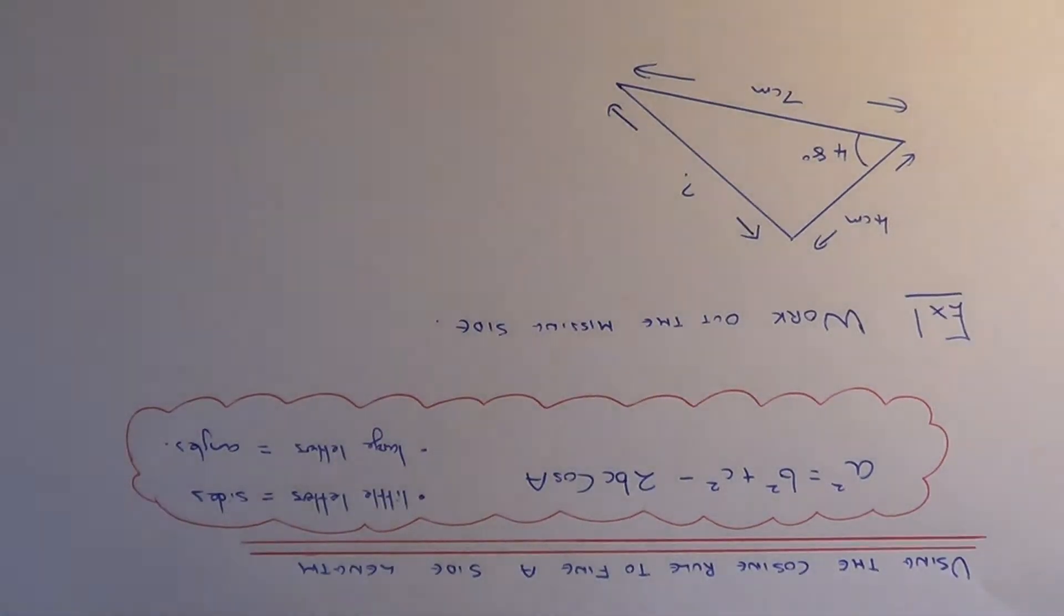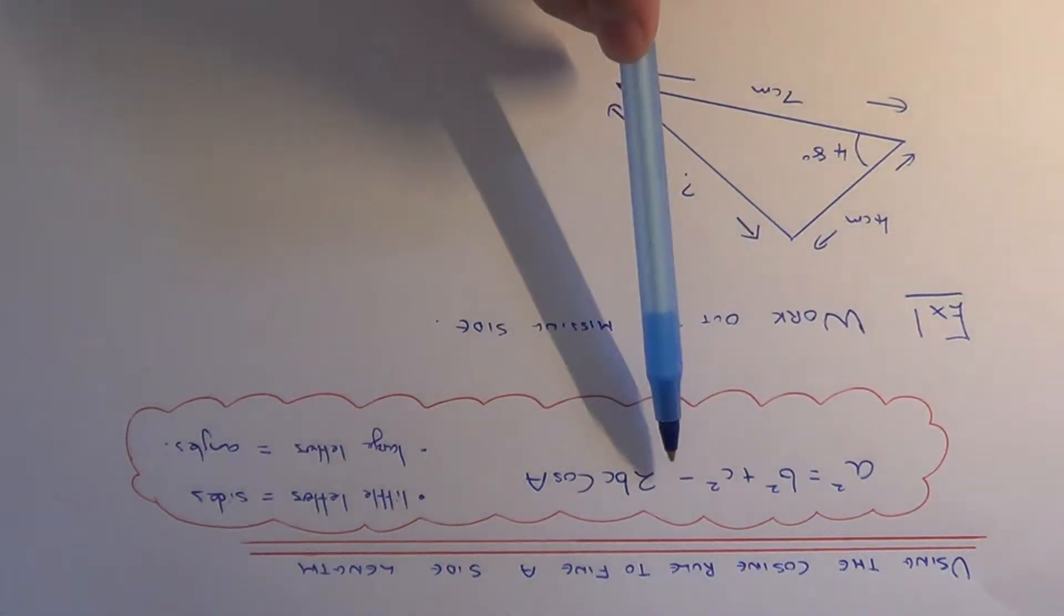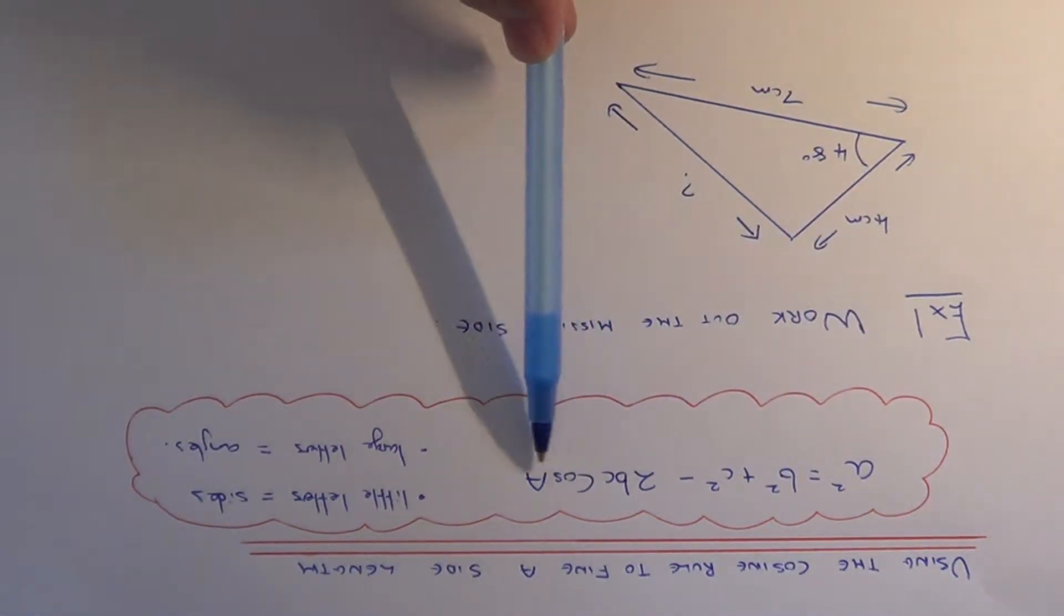Today I'm going to show you how to use the cosine rule to work out a missing side length in a non-right angle triangle. The cosine rule formula is a² = b² + c² - 2bc cos A.